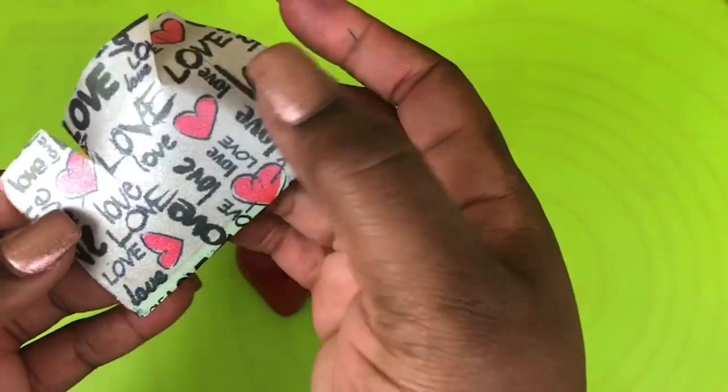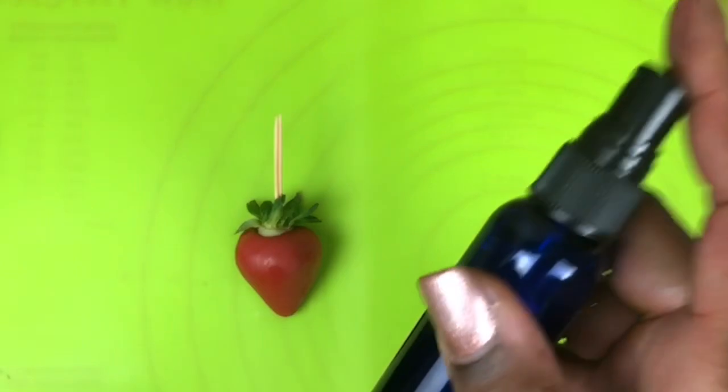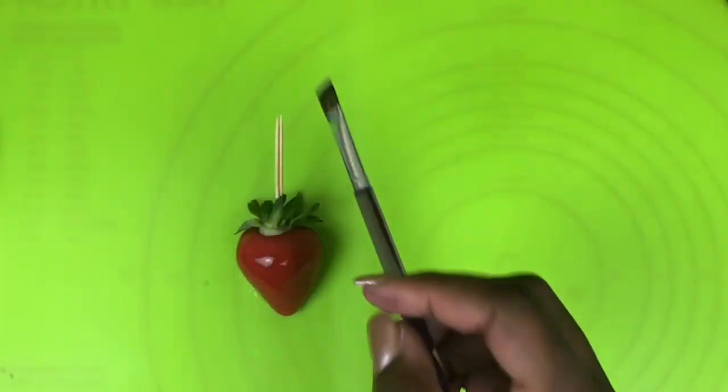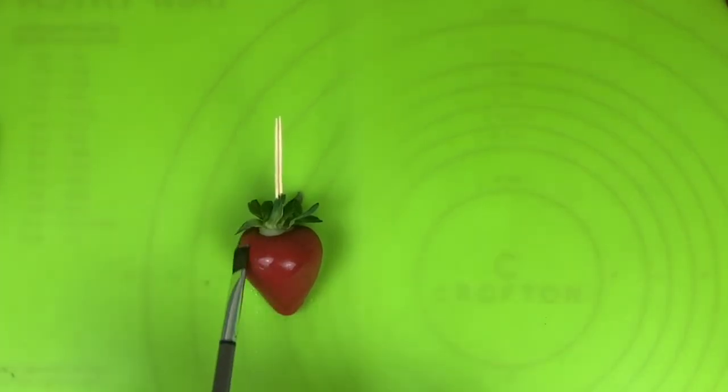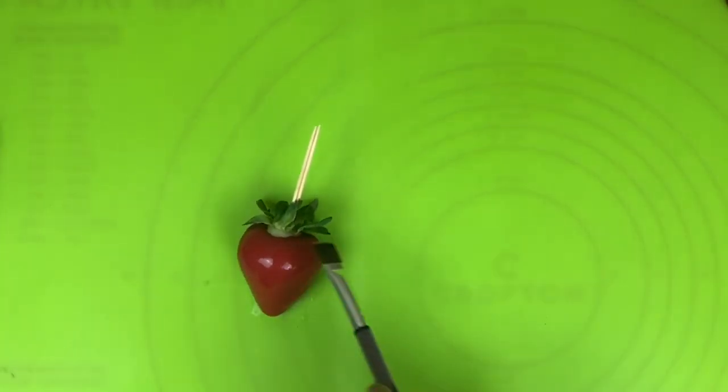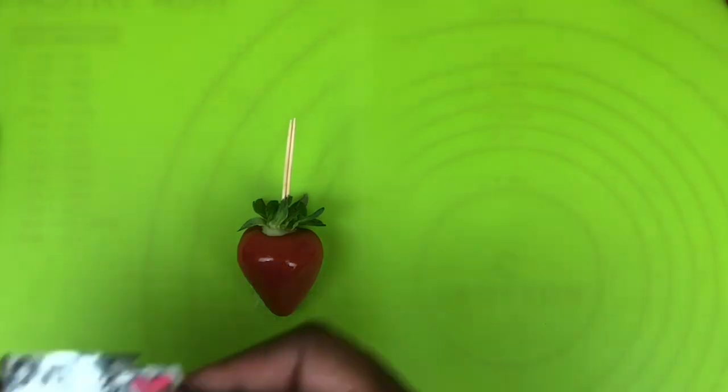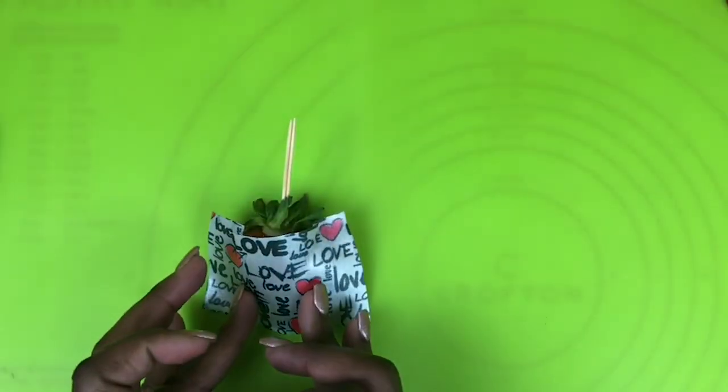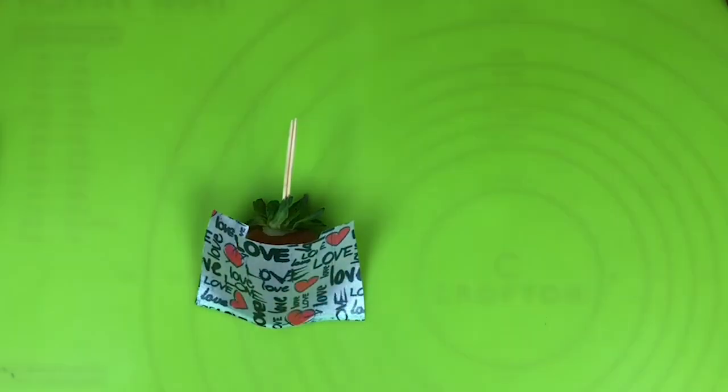You can also spray the strawberry and just apply a thin application. You don't have to saturate it, just a thin application over the strawberry. Then place your image right along the strawberry starting from the base and work your way up.